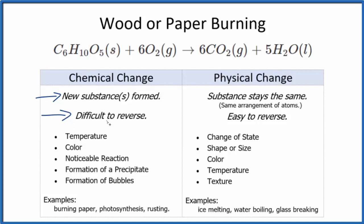again, but it's difficult to reverse. We can see that a new substance is formed in the chemical reaction here. This is cellulose, a component of wood and paper. We add oxygen, maybe give it a spark from a match, and when the reaction takes place, instead of cellulose and oxygen, we have carbon dioxide and water. So definitely